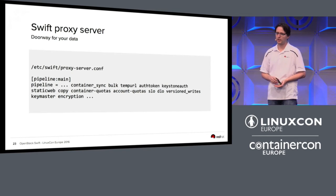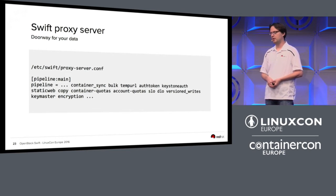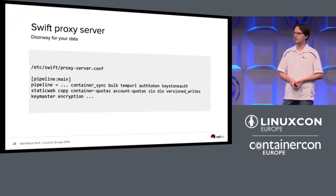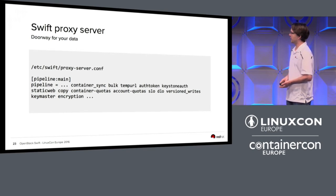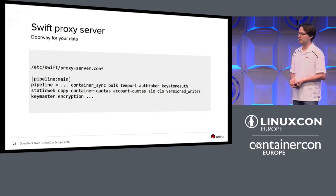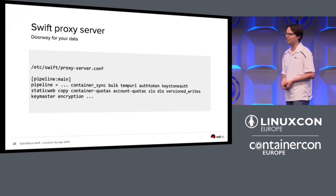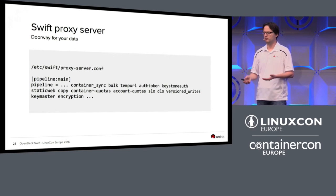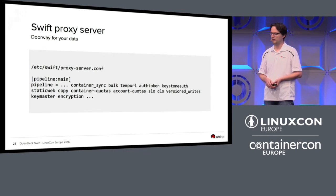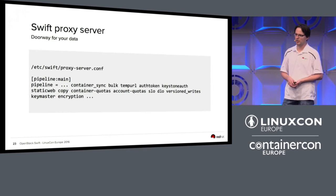There is a middleware for bulk operations — if you have thousands of small objects to upload quickly, it's much easier to send a tar file to your cluster and tell Swift to extract them into your container; the bulk middleware handles this for you. There are also authentication middlewares. Keystone is an OpenStack project used in basically every OpenStack deployment, and Swift can use Keystone for authentication. Of course, you can write your own middleware to hook Swift up to whatever authentication system your company already has available.